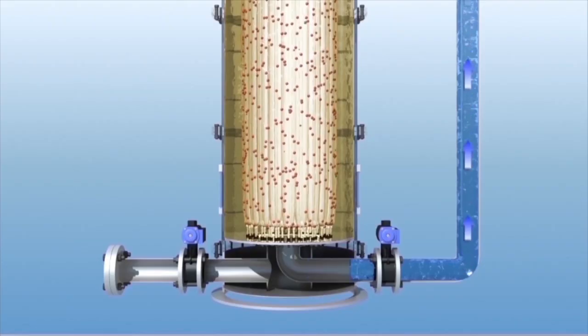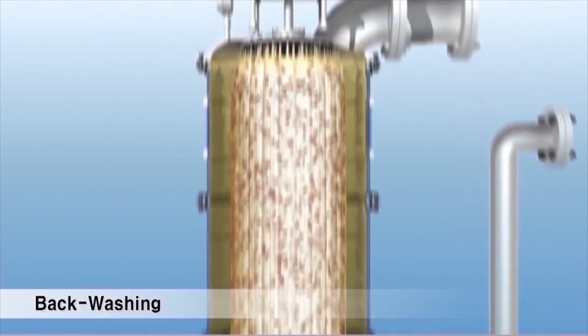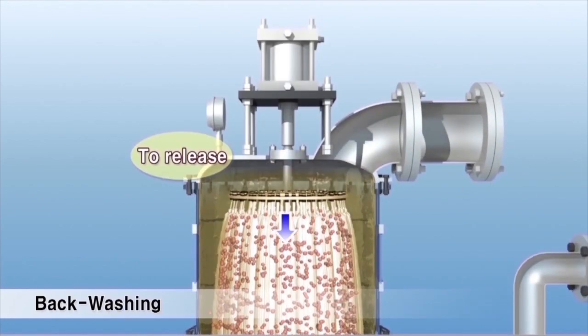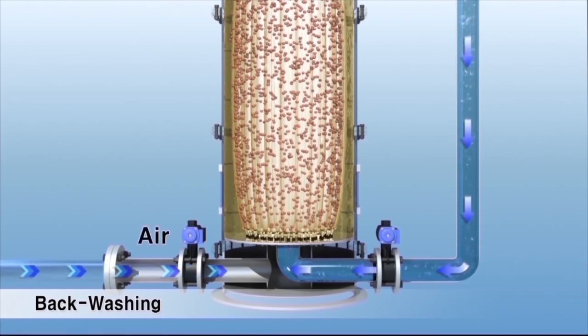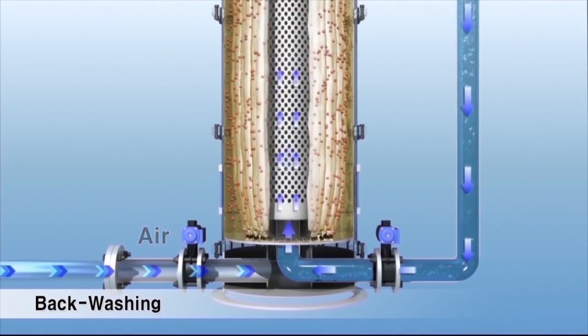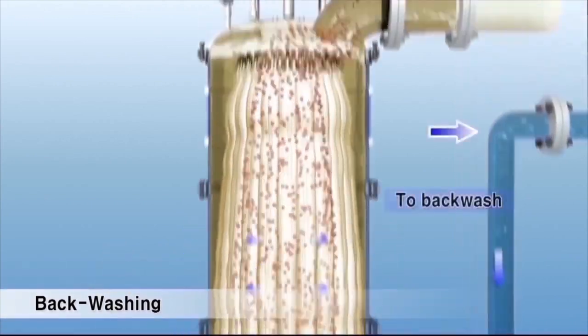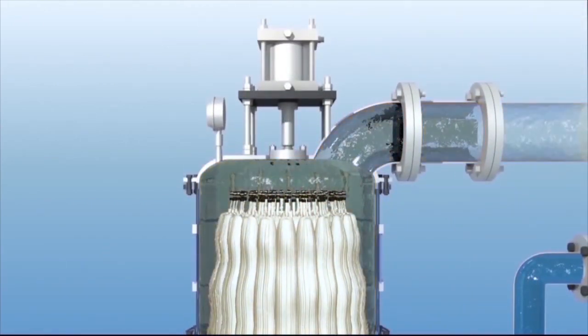It is an air gap controlling filter that filtrates by reducing the air gap and backwashes by releasing and expanding it. Captured SS gets isolated from fiber media by reverse air and is discharged out of the filter by backwashing water.